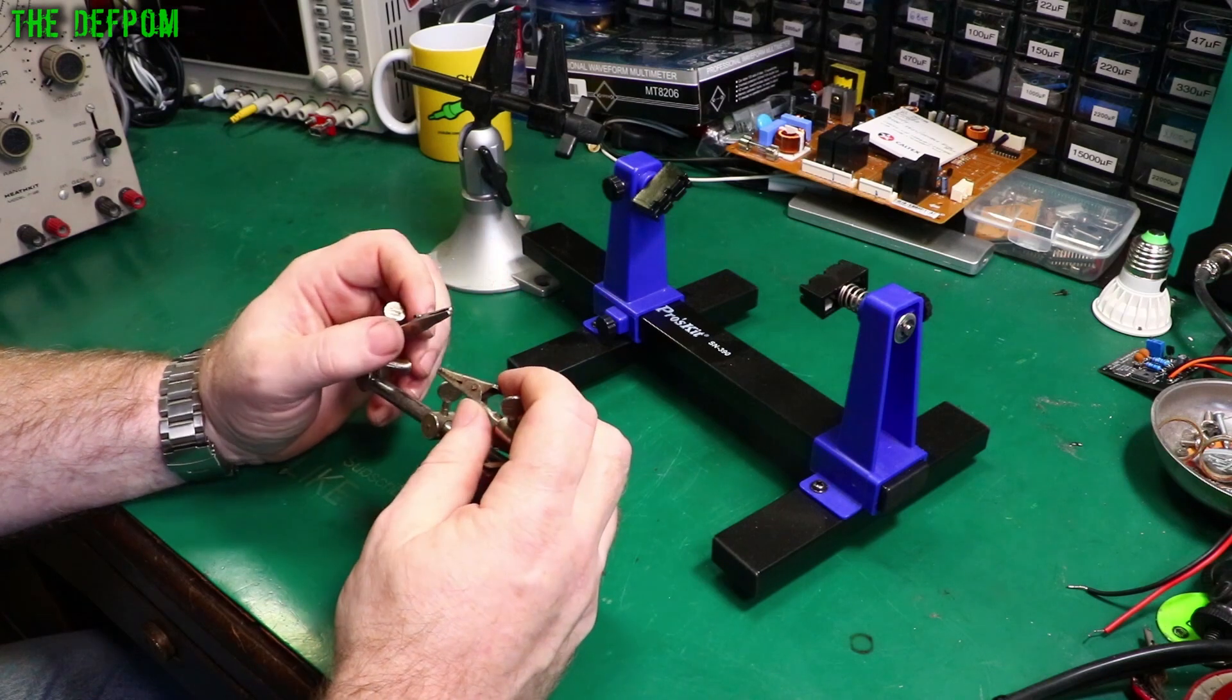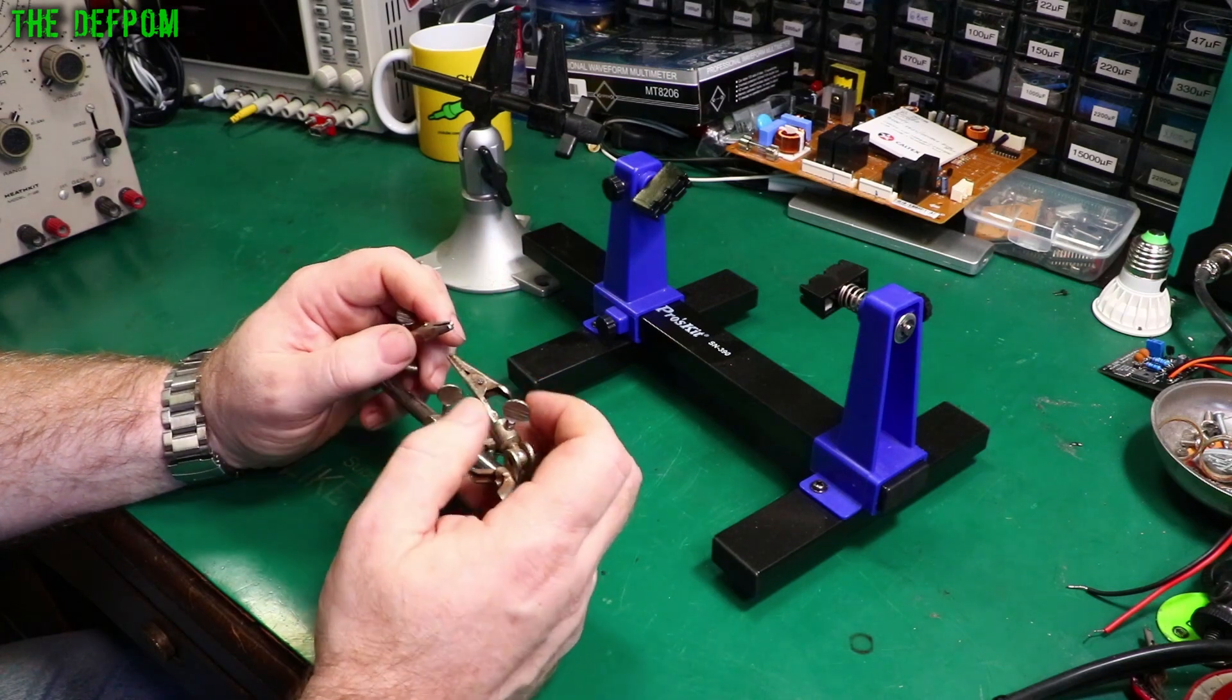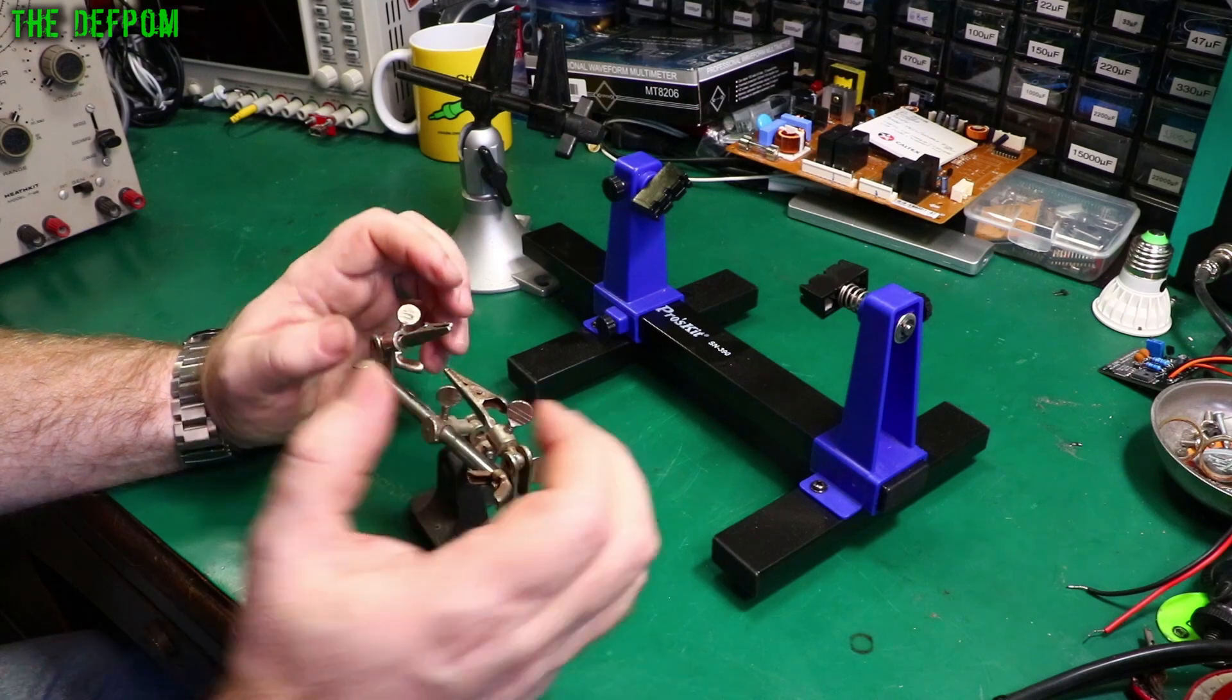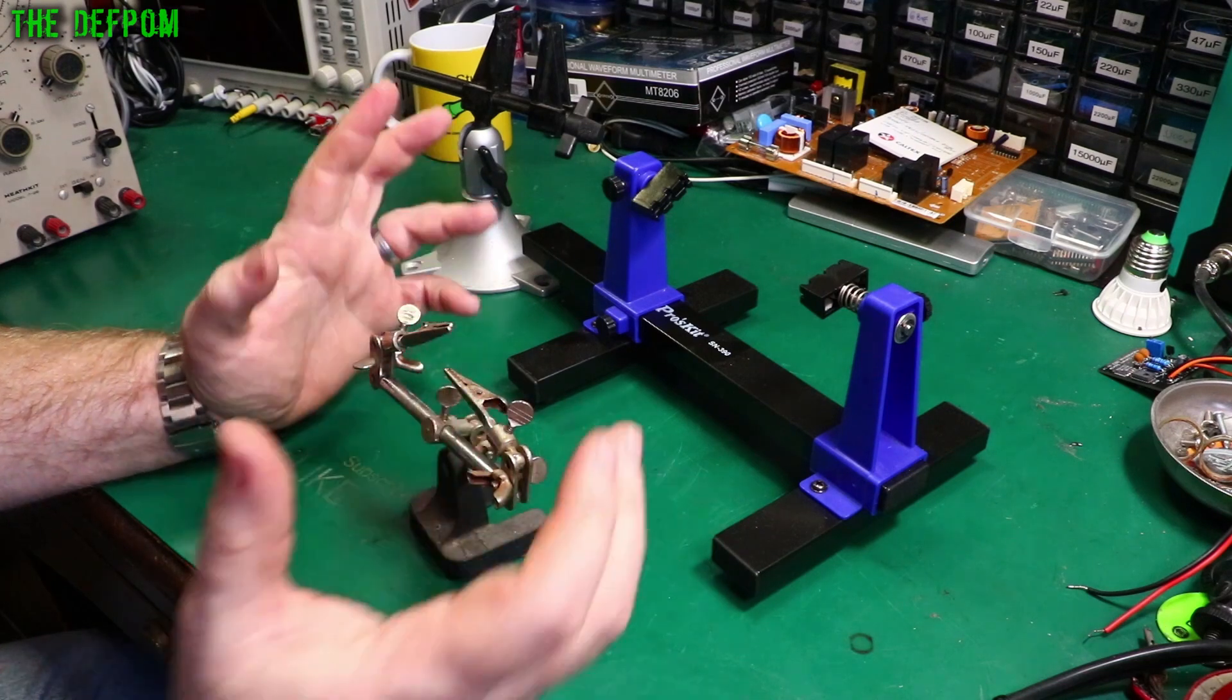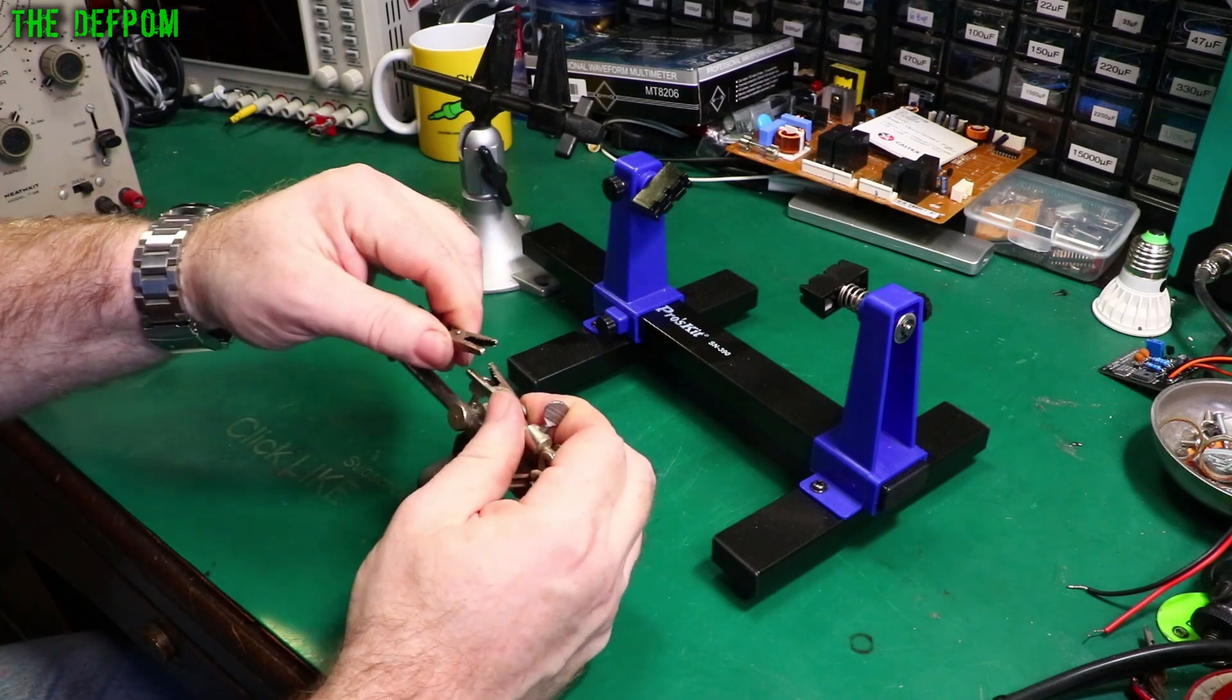I use this when I'm doing repairs on the electrofusion welders, when I'm repairing the plugs because they are basically a big solid lump of brass and I have to solder wires into those. So I'll clip these in here.